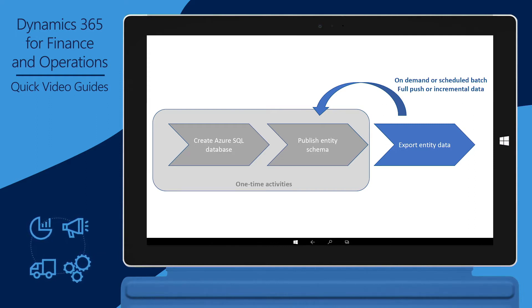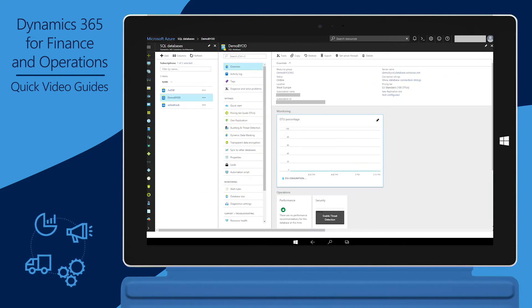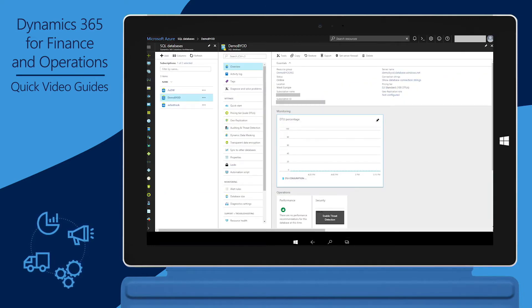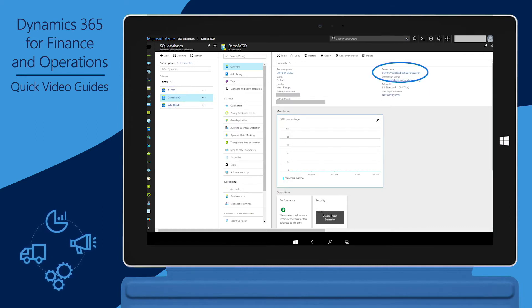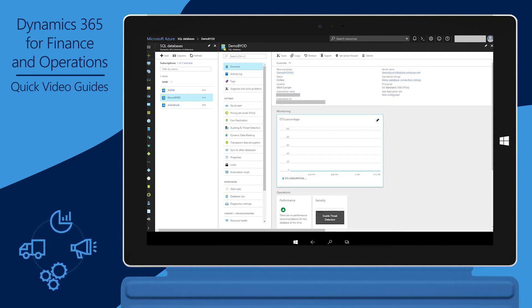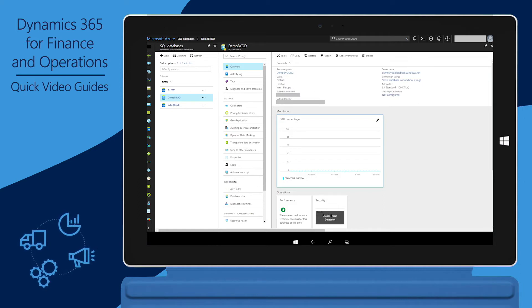You must complete these steps only once. You can then export data from finance and operations to the target database on a recurring basis. The first step is to create an Azure SQL Database in your own Azure subscription. An Azure SQL Database named Demo BYOD has been created on the server named demobyod.database.windows.net. If you're using the BYOD feature for integration with a business intelligence tool, you should consider creating an Azure SQL Premium Database to take advantage of its clustered column store indexes, also known as CCIs.